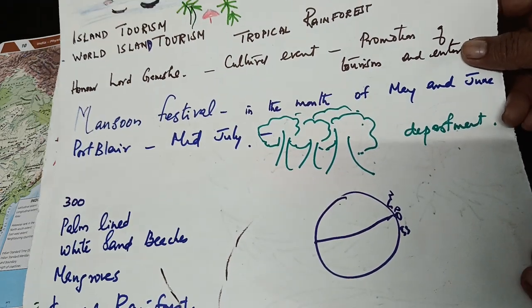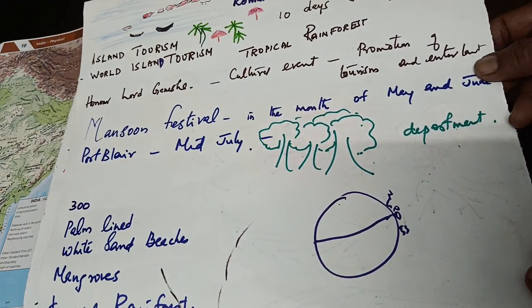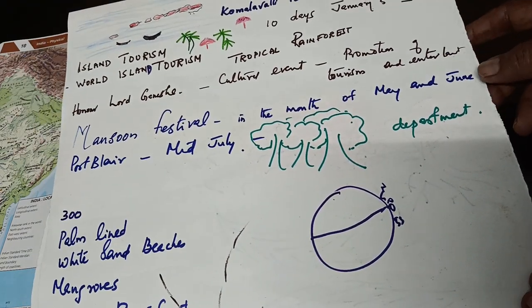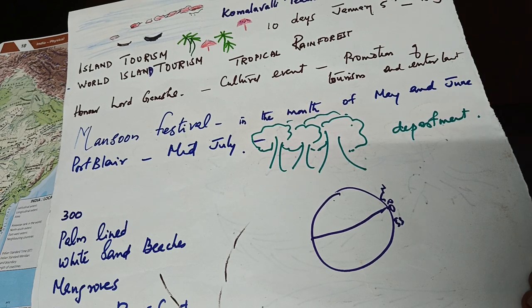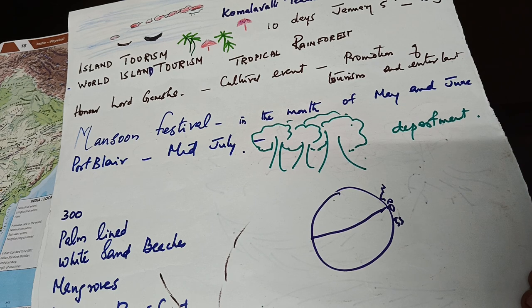Then comes the monsoon festival, which is conducted between the month of May and month of June. In May, how many days are there? In June, how many days? That way you can teach. It is also conducted at the port in mid-July.